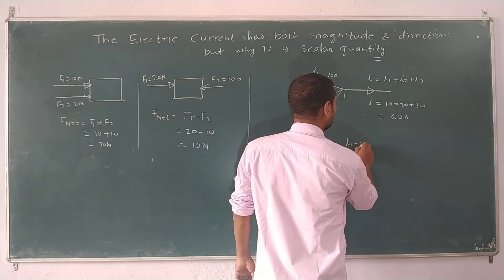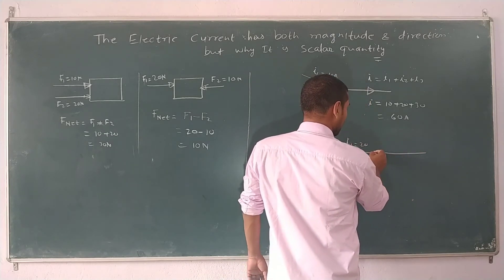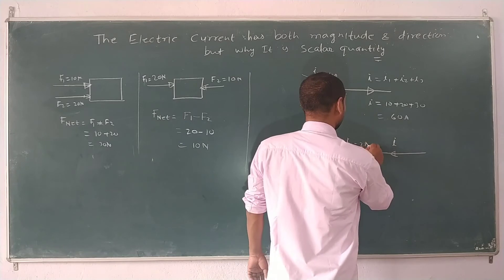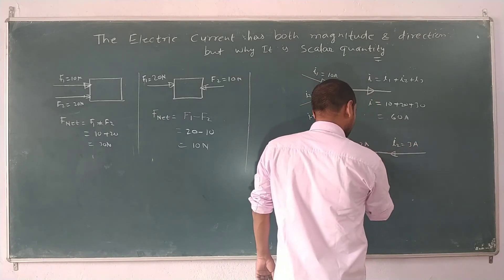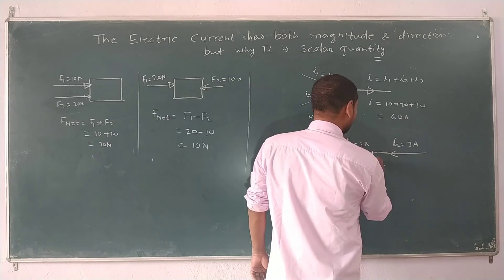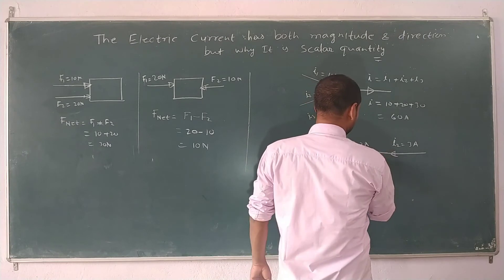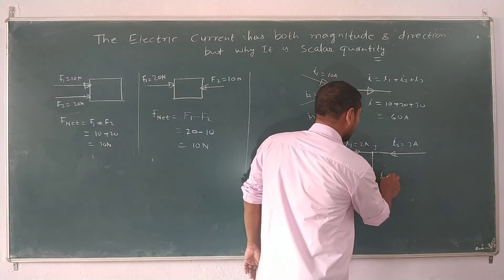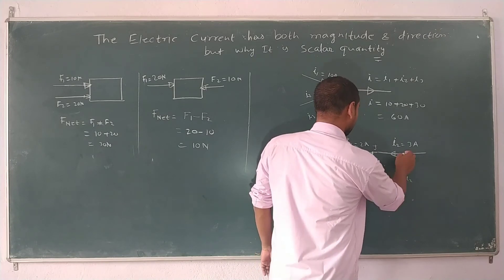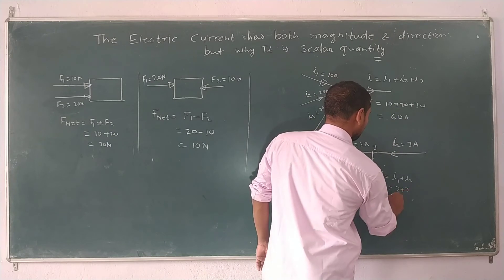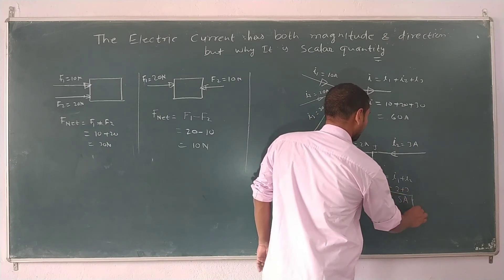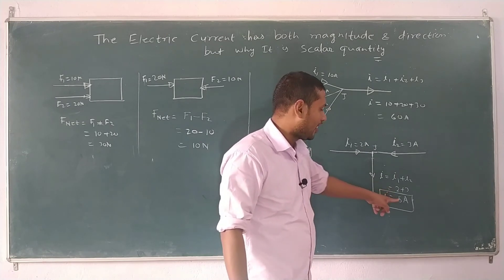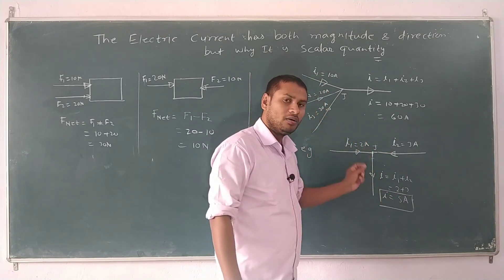Another example: suppose there is a current I1 equal to 2 ampere and I2 equal to 3 ampere, and after the junction only one wire is connected. The net current I equals I1 plus I2, which is 2 plus 3, equal to 5 ampere only. Here I1 and I2 are in the same direction, but still they simply add up because there is no meaning of direction for current.